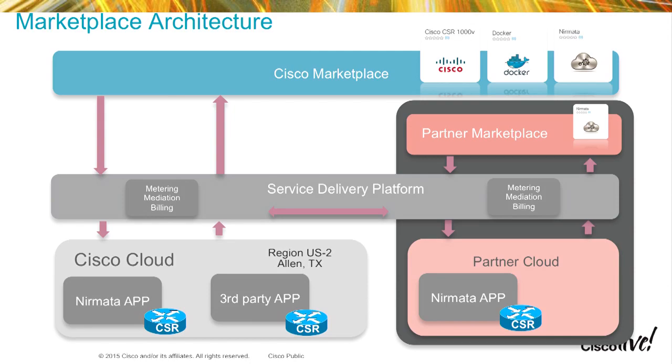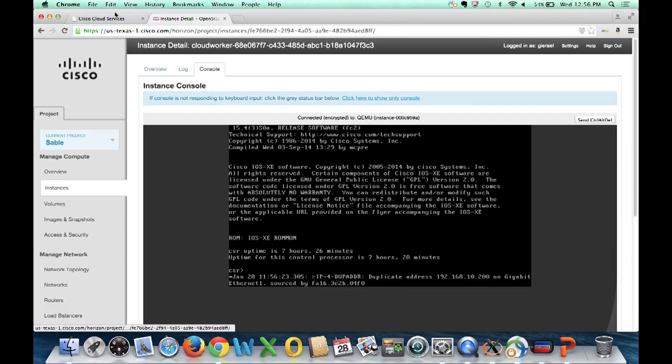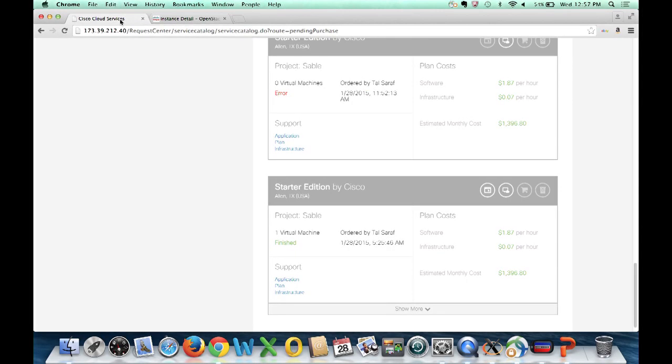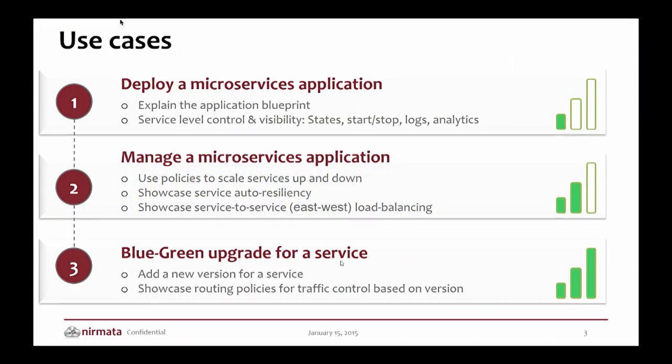We'll bring our next speaker to talk about how this has actually been done for a partner. Hi, I'm Damien Toledo from Niermata. I'm a co-founder and VP of Engineering. Niermata is a company that is part of the Cisco marketplace. We provide a service to deploy cloud-native applications on CCS in the cloud, and I'm going to show you a short clip of how we do that.